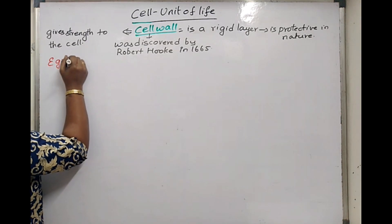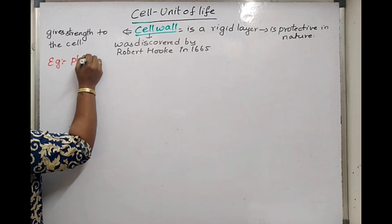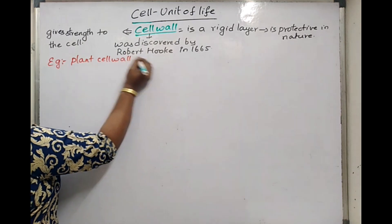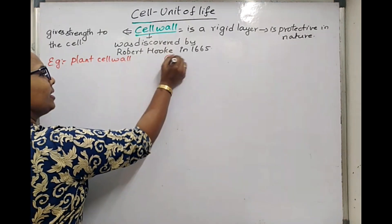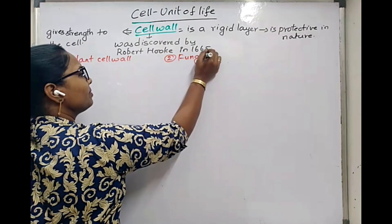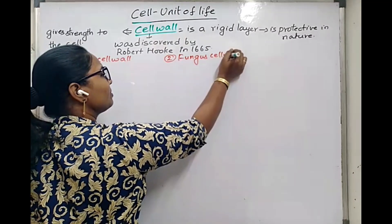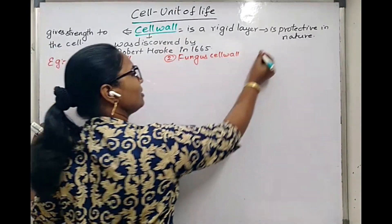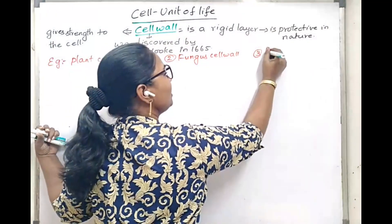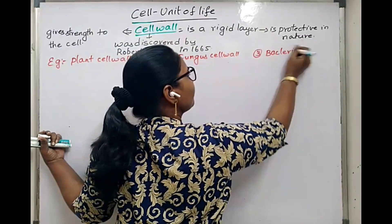Examples of cell walls are: first, plant cell wall; second, fungus cell wall; third, bacterial cell wall.